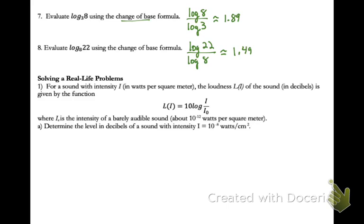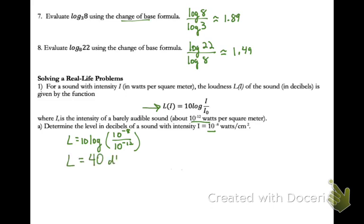Now let's solve some real-life problems. For a sound with intensity i in watts per meter squared, the loudness L in decibels is given by: L equals 10 times the logarithm of the sound intensity divided by i sub 0, where i sub 0 is the intensity of a barely audible sound, which is 10 to the negative 12. To find the loudness of a sound with intensity 10 to the negative 8, plug it into the formula: L equals 10 times log of 10 to the negative 8 divided by 10 to the negative 12. Enter that in your calculator — the loudness is 40 decibels.